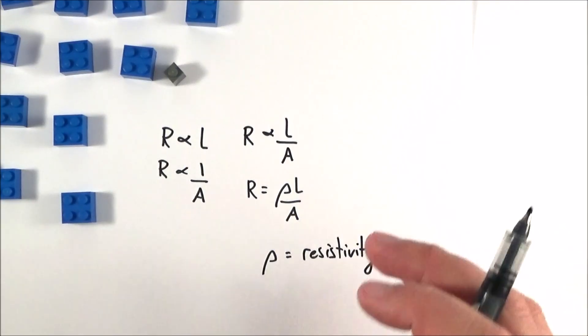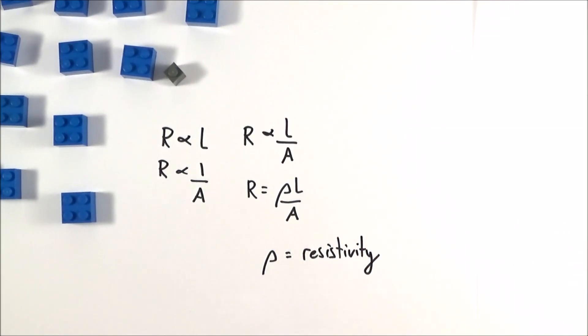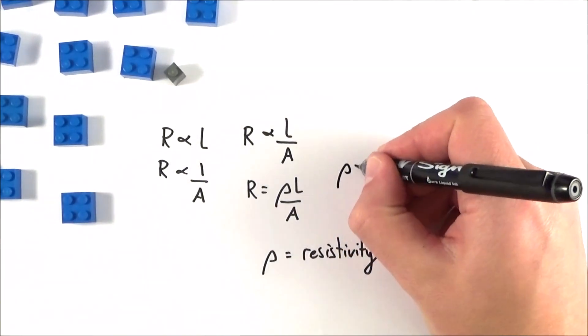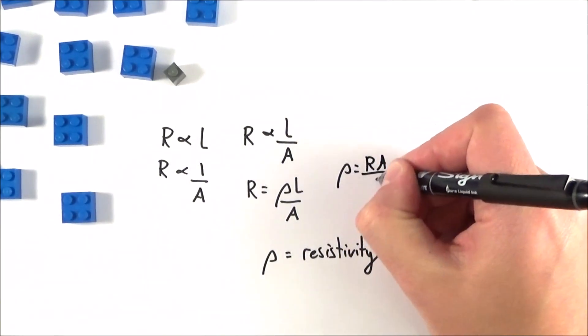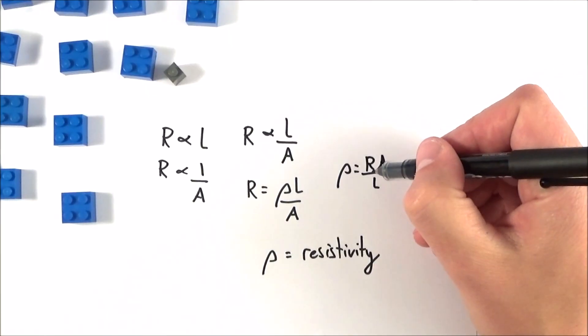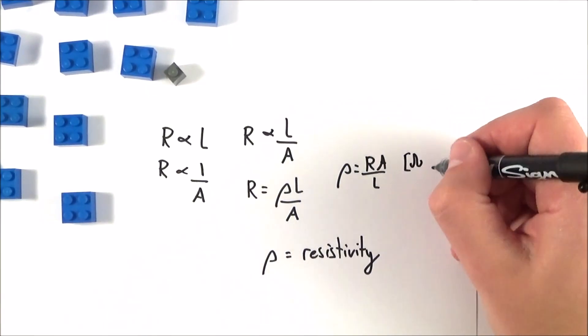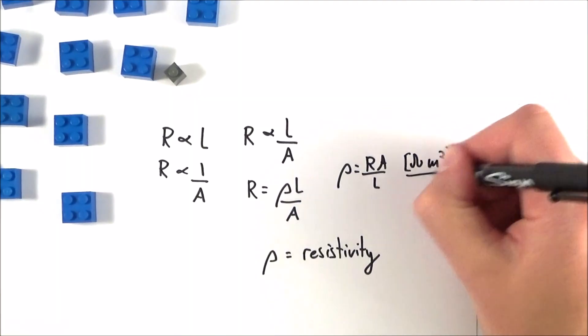If we think about the units, we can rearrange this equation to say that ρ is equal to RA over L. Bearing in mind we look at the resistance in ohms, the area in meters squared, and we're dividing by meters, this gives us the units for resistivity to be the ohm meter.